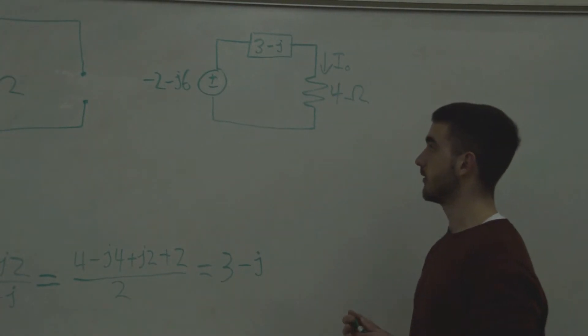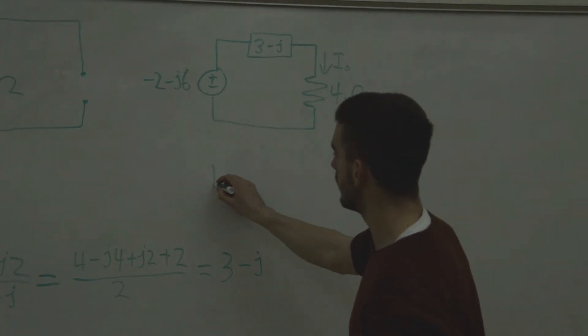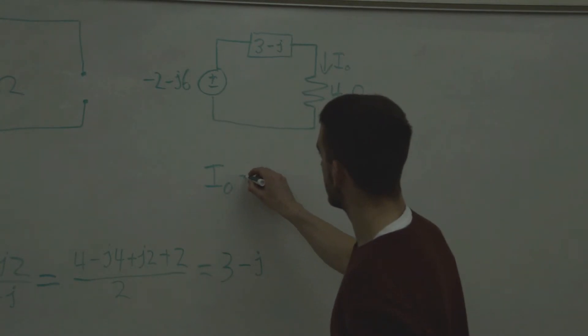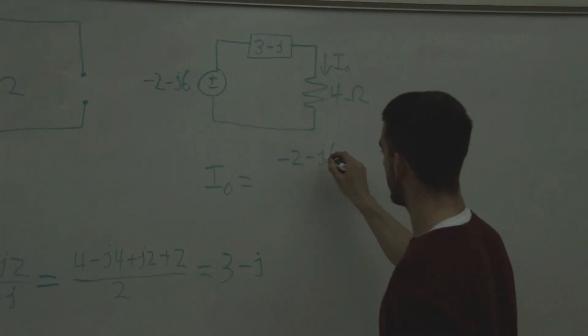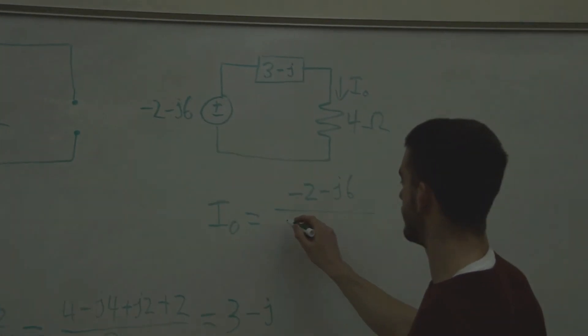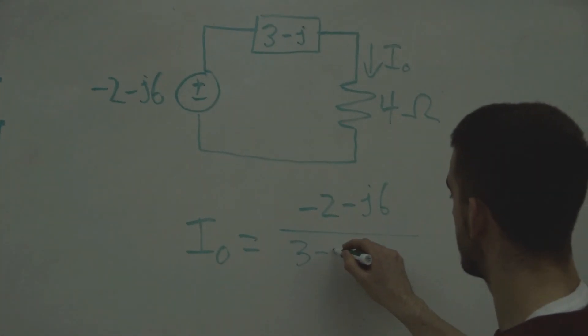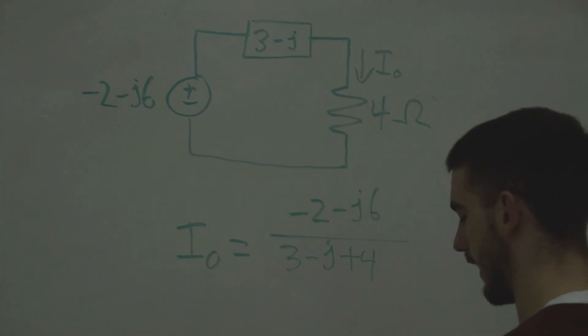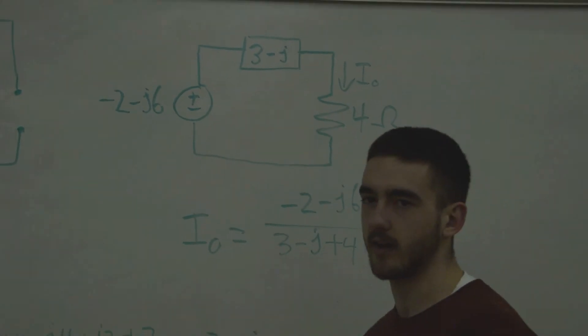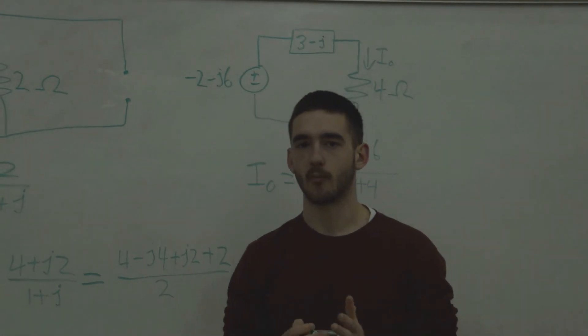Since this is a series circuit, we can just add these two together and then use Ohm's law. So the end result is that I-O equals negative 2 minus J6 over 3 minus J plus 4. And that is the final answer for I-O. I hope that helped.